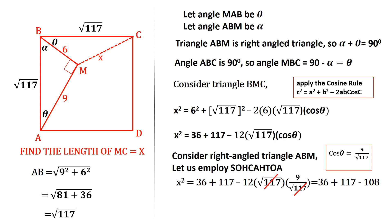Square root of 117 cancels out in the numerator and denominator, so we are now only left with 36 plus 117 minus 12 times 9. And so X squared is 153 minus 108, and that gives us 45.